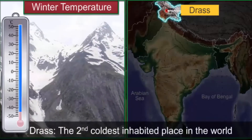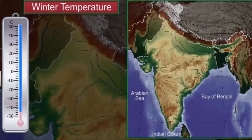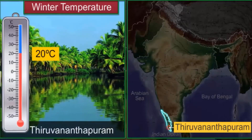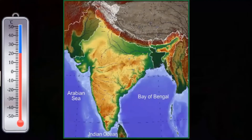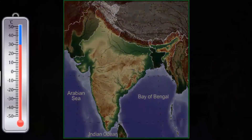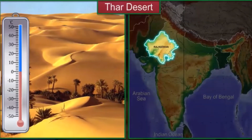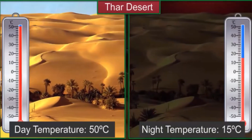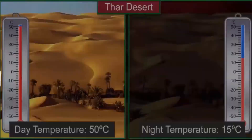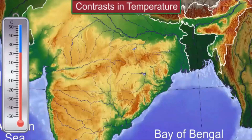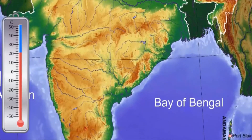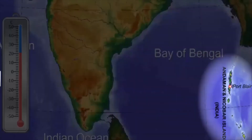On the other hand, Thiruvananthapuram may have a winter temperature of 20 degrees Celsius. Certain places experience a wide difference between day and night temperatures. For example, in the Thar desert, the day temperature may rise to 50 degrees Celsius and drop to nearly 15 degrees Celsius at night. Contrasts in temperature are experienced more in the interior of the country. On the other hand, there is hardly any difference in day and night temperatures in the Andaman and Nicobar Islands or in Kerala.